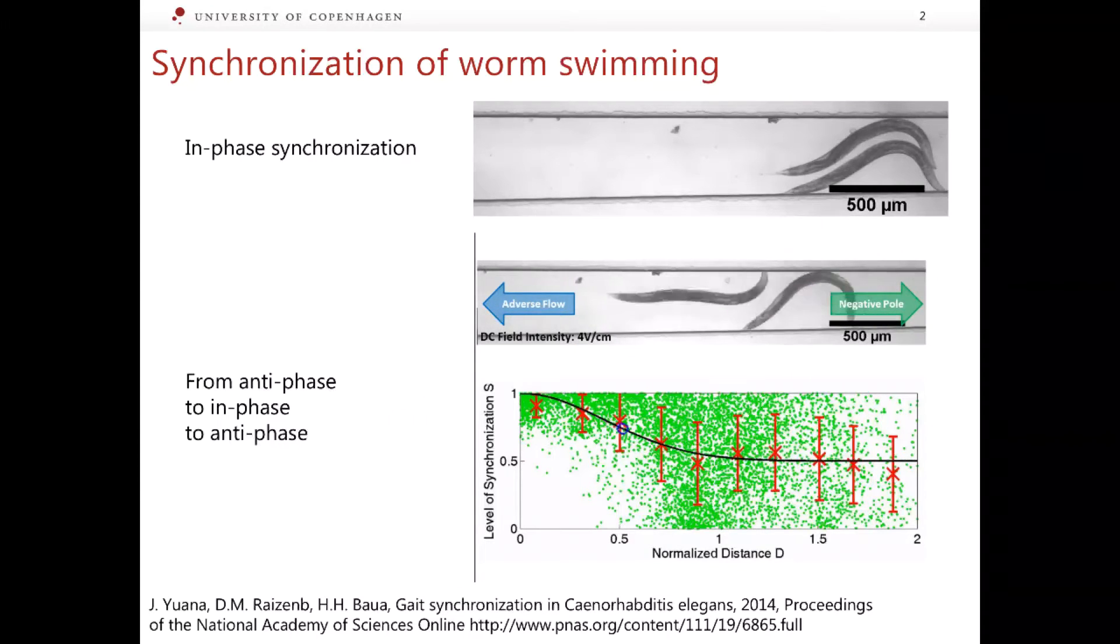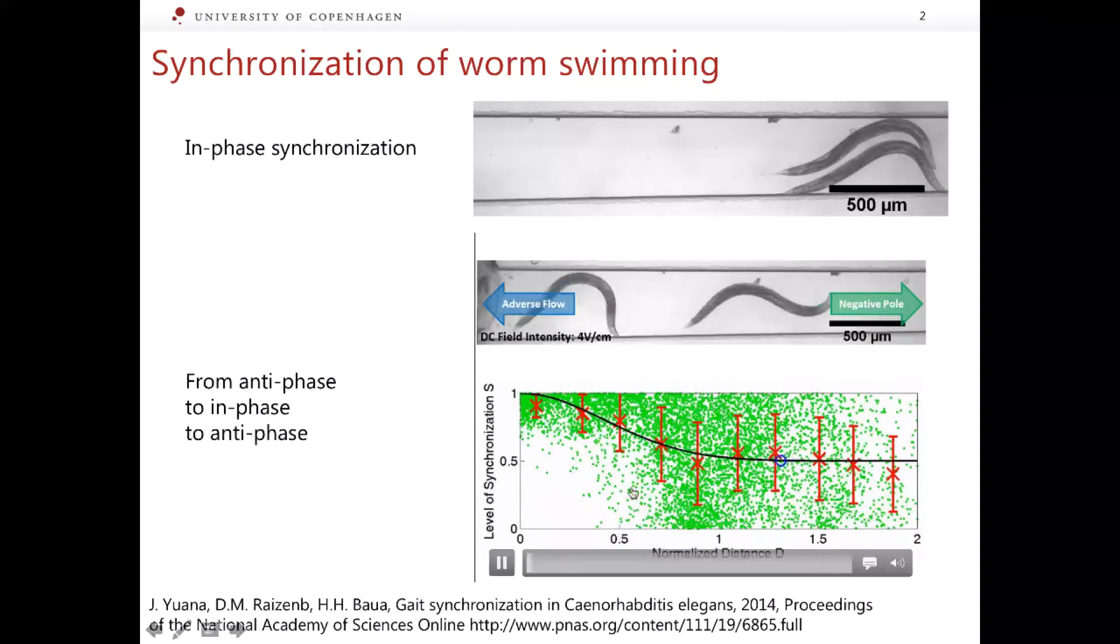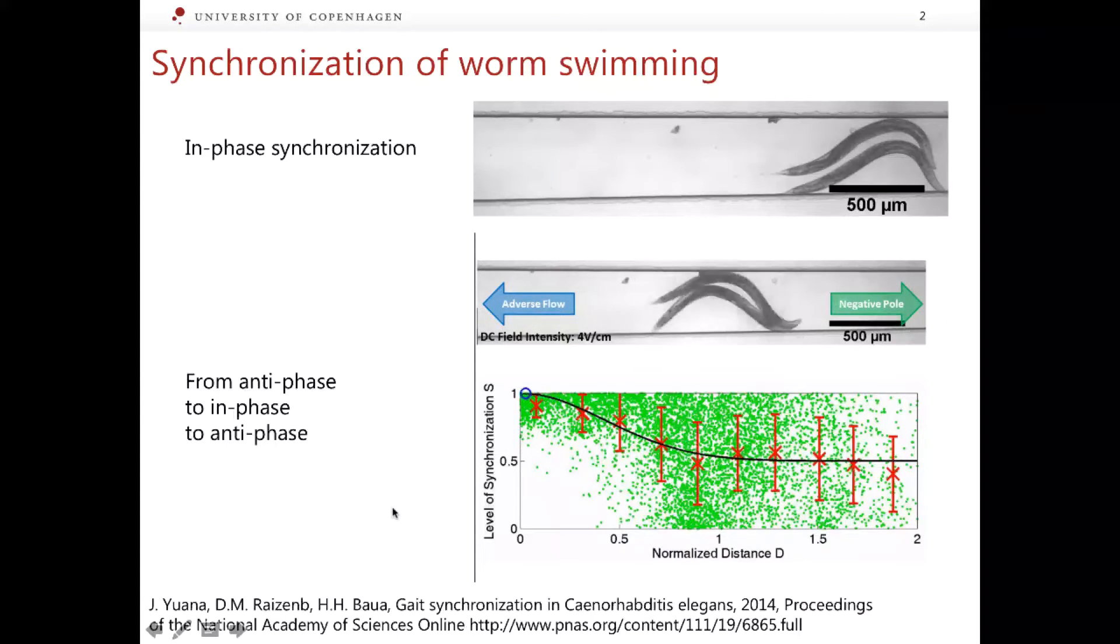When the distance is large, which corresponds to the far right position of the blue circle in the lower panel, the worms swim in the anti-phase manner. When one worm bends upwards, the other bends downwards. However, when the worms come closer and the distance decreases, which corresponds to the blue circle appearing in the far left position, the worms swim in-phase. This means that they bend their bodies in the same manner at every time moment.